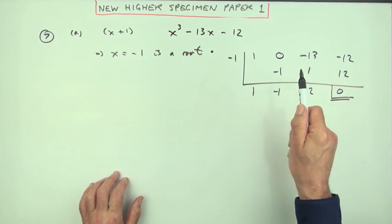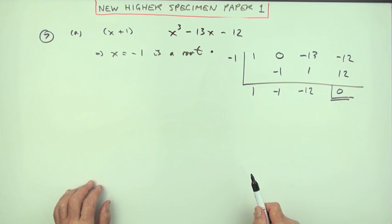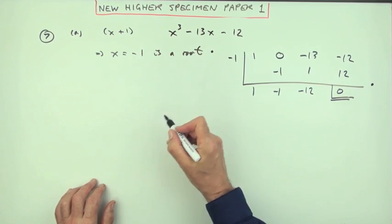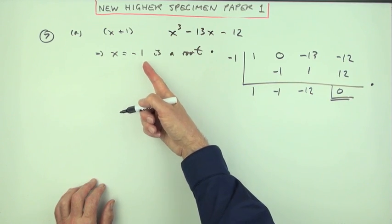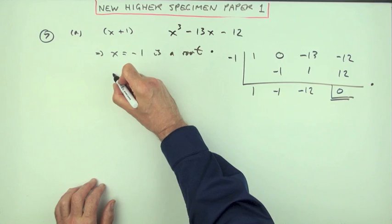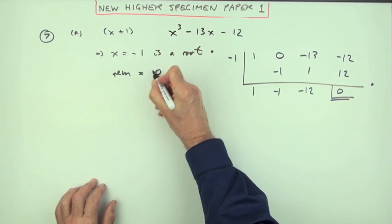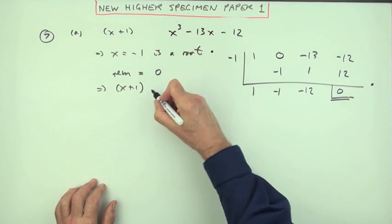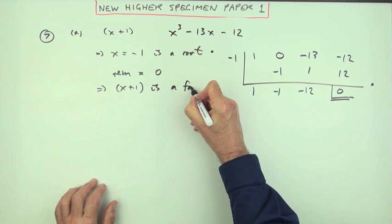So you tend to call it synthetic division, rather than an evaluation table. But the remainder equals zero. So that means that x plus one divided in exactly. So x plus one is a factor.